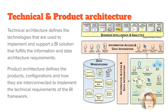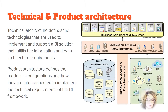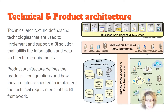Resist the urge to evaluate products immediately. Determine your information and data needs and then select the technologies that will support them. There are four technology layers: the business intelligence and analytics layer, which are the tools that a person or process uses to analyze information; the information access and data integration layer, which are the tools used to gather, integrate and transform data into information and make it available; and data warehousing, any database or file used to store and integrate data to be consumed by BI and analytics.